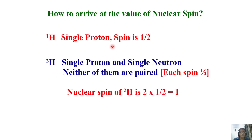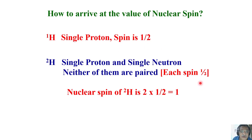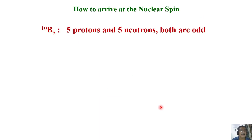Now let us take deuterium. It has a single proton and a single neutron. There is no pairing - neither of them is paired; they are single unpaired spins. Each of them has spin half. Now combine this: what is the total nuclear spin of deuterium? Two times half - each of them has spin half - so two times half equals one. The spin of deuterium is one.